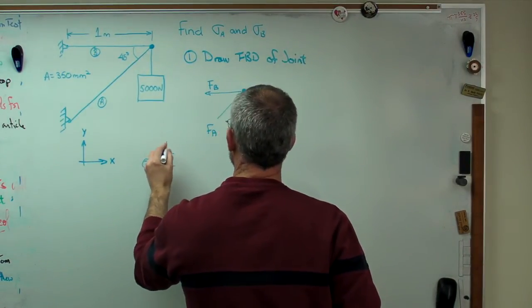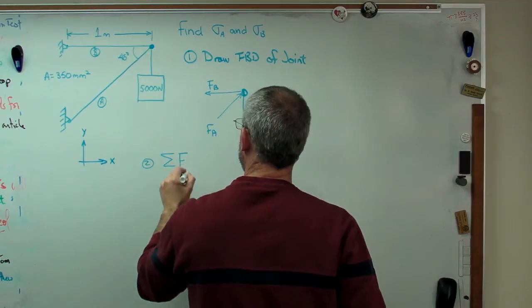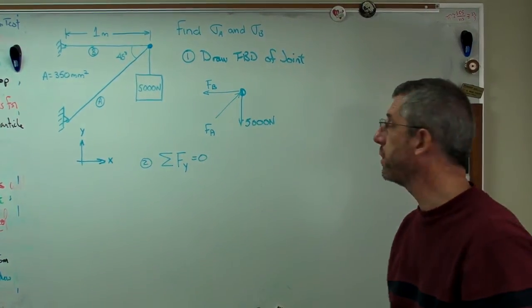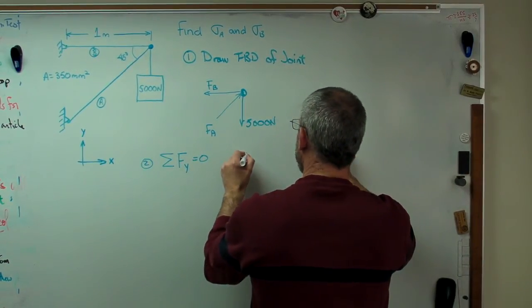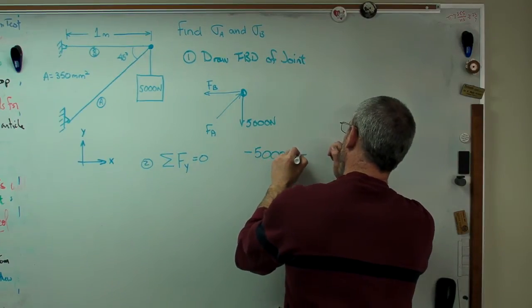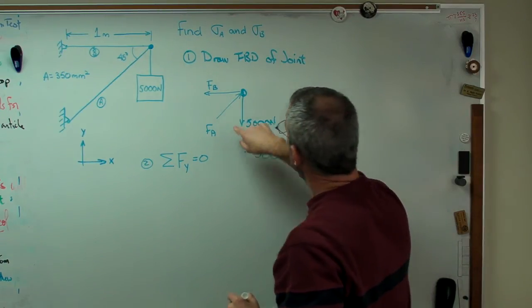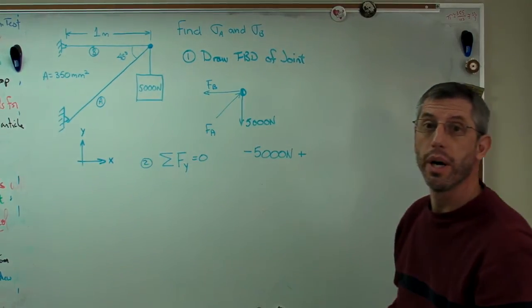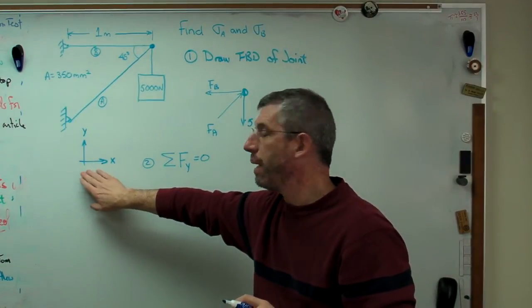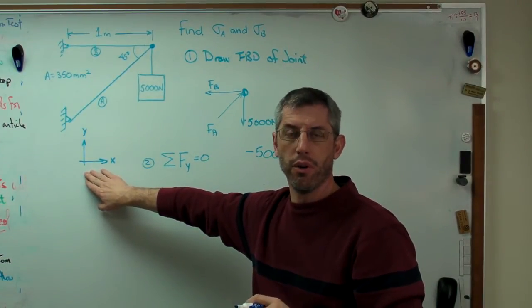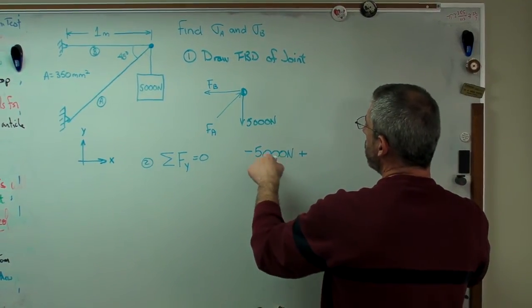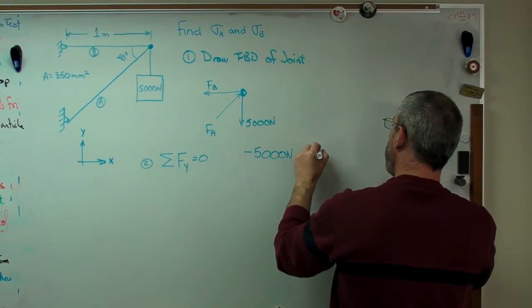Let's sum the forces in the Y direction. Sum the vertical forces. Well, there's really only two. So I know that negative 5,000 newtons, negative because this is acting down, acting opposite my assumed positive direction. This is the coordinate system I'm using, and I mostly use this one unless I have a pretty good reason to do otherwise.